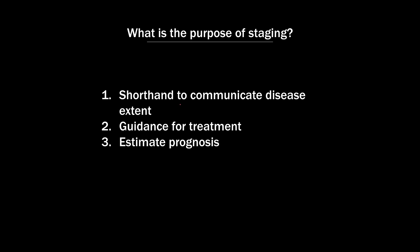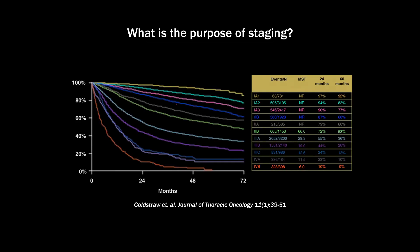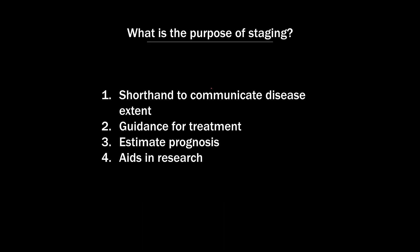Third, staging is used to estimate prognosis. Here's a graph of two- and four-year survival based on the stage of lung cancer. You can see that these survival curves are very well separated, meaning that the increase in stage carries meaningful, real-world repercussions in terms of survival. Finally, it aids in research. When studying a certain therapy, the patient population has to be defined. Without a universally accepted staging system, research would be extremely difficult to coordinate among institutions, and it would be difficult to apply the results to your patient population.